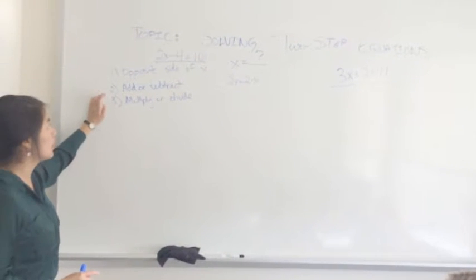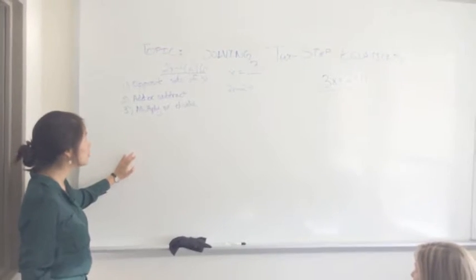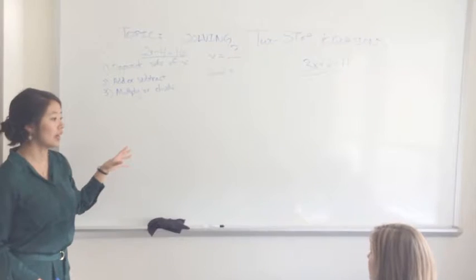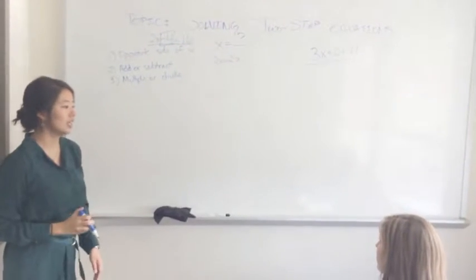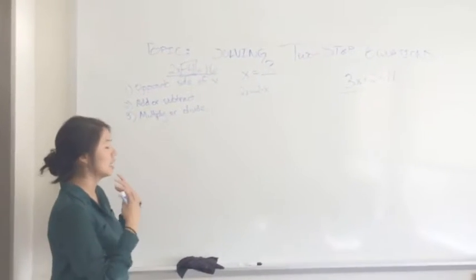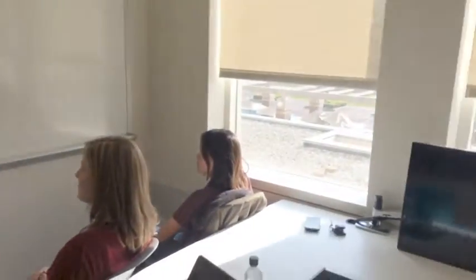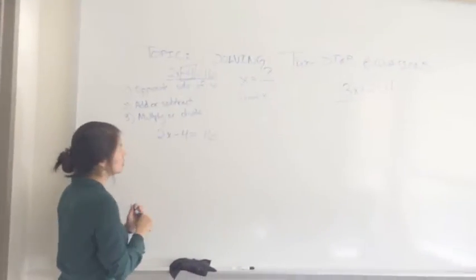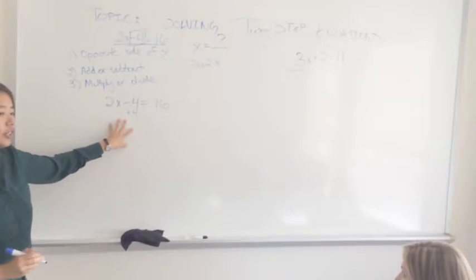Now, the second part of solving these equations involves adding or subtracting. So what we need to do first is we need to take the number that's not paired with x. And that number, if we look here, is negative 4. So in order to get rid of negative 4, we need to take the opposite of a negative. And what's the opposite of a negative? Positive. So what we're going to do is we're going to take positive 4, because negative 4 plus positive 4 equals 0.